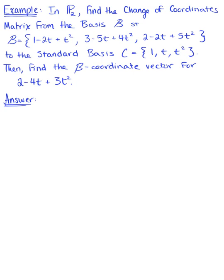Let's begin by letting our basis B be defined by the set of three polynomial vectors: vector p sub 1, vector p sub 2, and vector p sub 3 — those three given vectors. The first thing we want to do is find the change of coordinates matrix P from basis B to basis C.